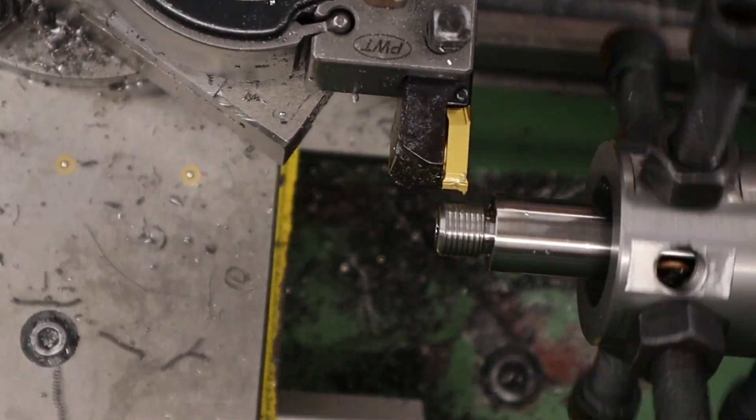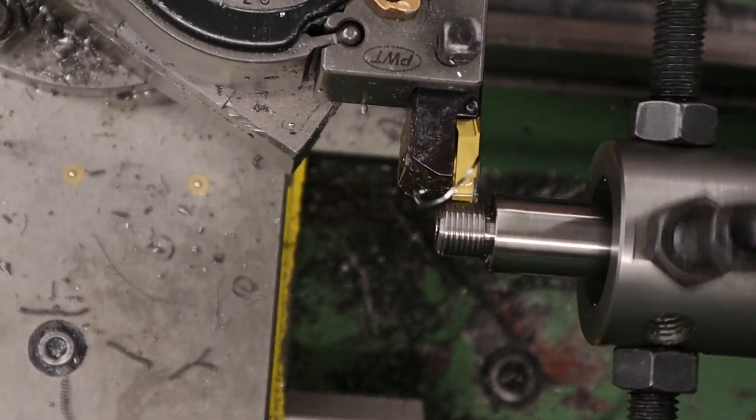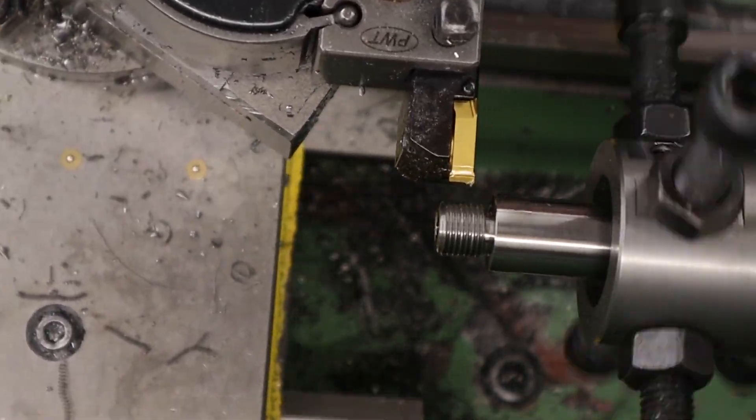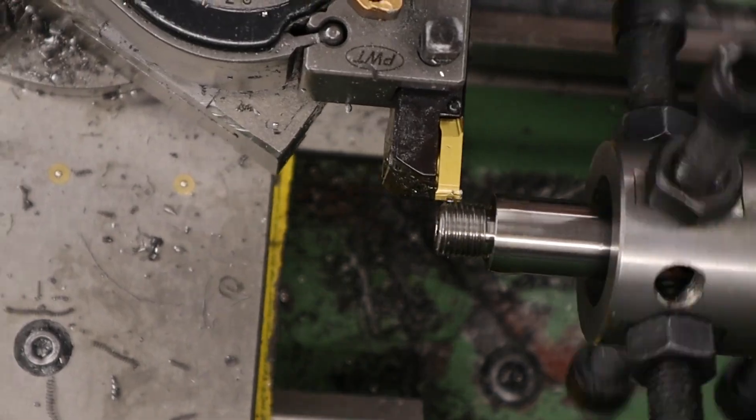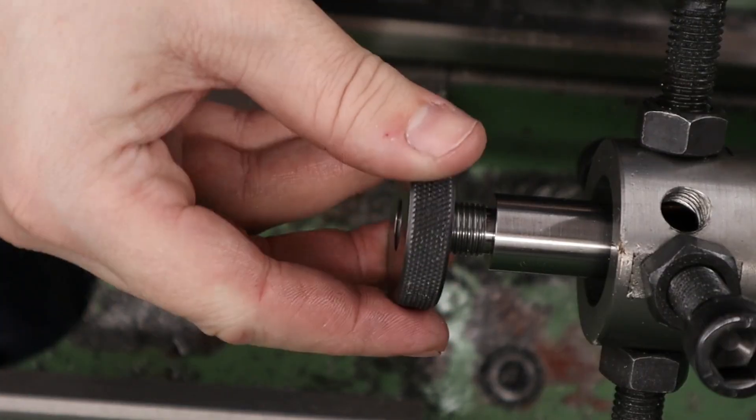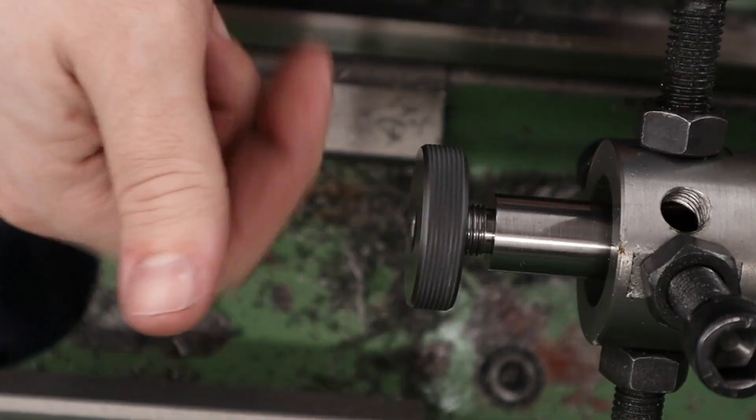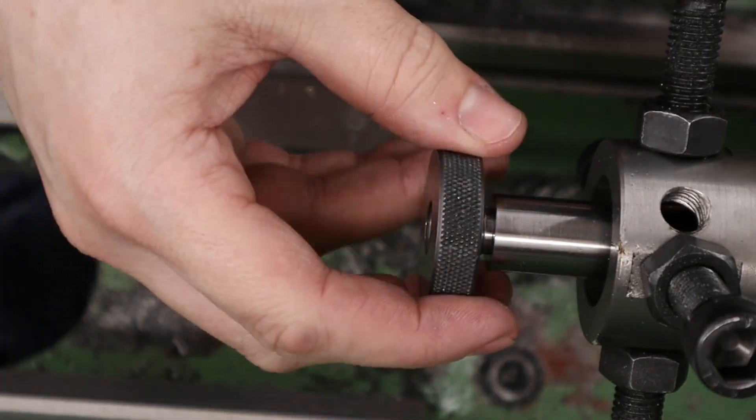To cut the threads we're using a single point cutter. Once we start getting close to the thread depth we can check the threads using a half inch UNF ring gauge. Ideally the thread gauge will screw on easily with no play between the gauge and the threads, and we manage to get pretty close to that.